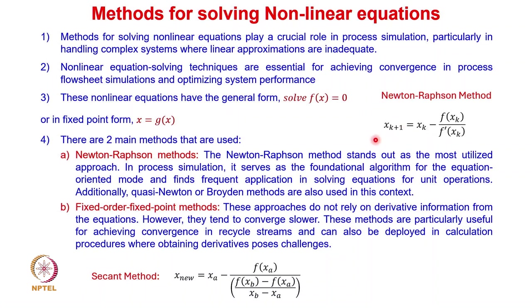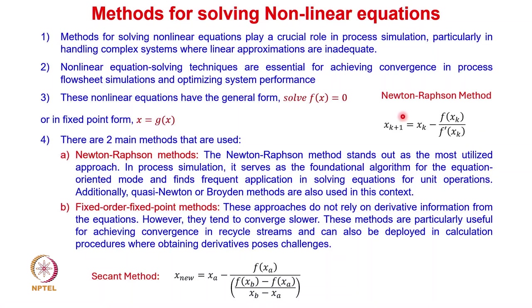The Newton-Raphson method for root-finding has the form: x_{k+1} = x_k − f(x_k)/f'(x_k), where f(x_k) is the function value at iteration k and f'(x_k) is the derivative. Newton's method for optimization modifies this to: x_{k+1} = x_k − f'(x_k)/f''(x_k), where the numerator is the Jacobian and the denominator is the Hessian matrix.